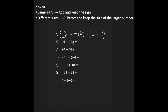For B, I look at my signs — they're both negative, so they have the same signs. I'm going to keep the negative sign that they have and add 6 plus 9. So my answer is negative 15.